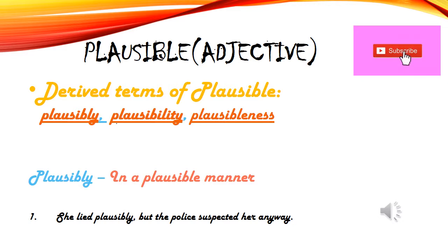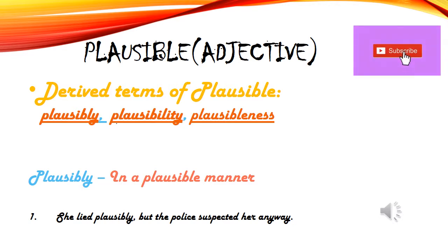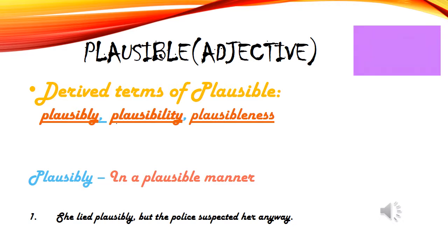Jab usne police ko statement diya, usne plausibly — ek plausible manner mein — aisa excuse diya jo kisi aur ko sach lag sakta tha. Lekin police, kyunki unka kaam hi waisa hai, phir bhi use suspect kar li aur catch kar liya.